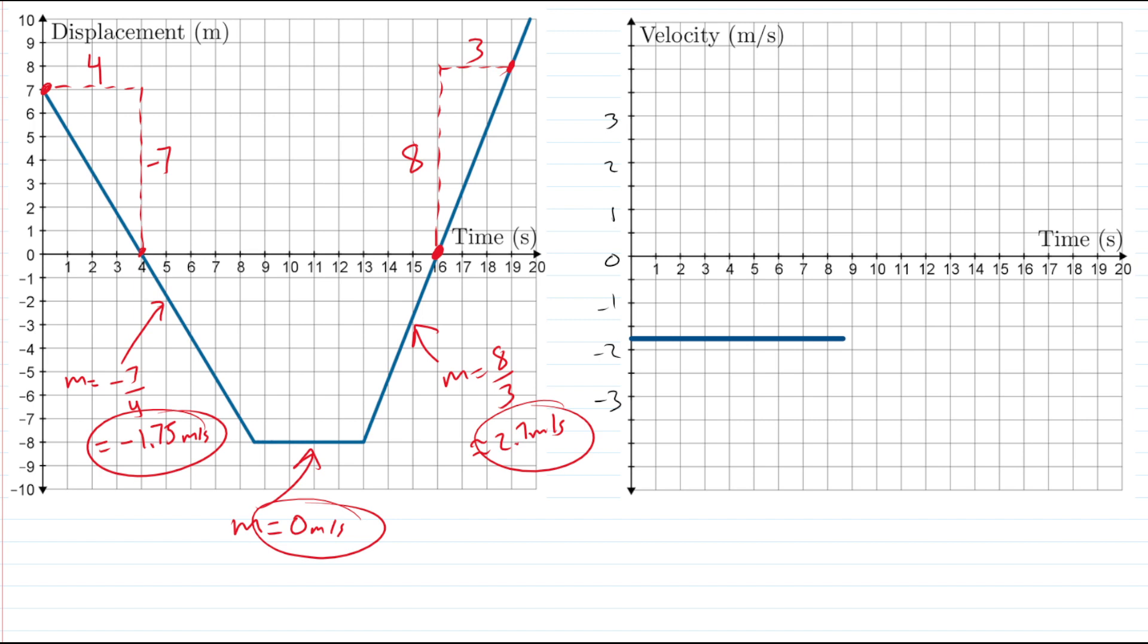Now our next part, this horizontal part down here has a corresponding velocity of zero meters per second. So we're going to draw a horizontal line at zero for the velocity. And that's going to go from about eight and a half seconds right there until 13 seconds right there. So eight and a half until about 13, that's going to be zero meters per second.